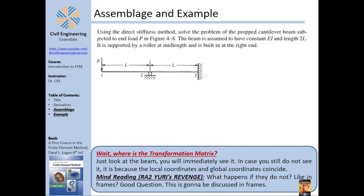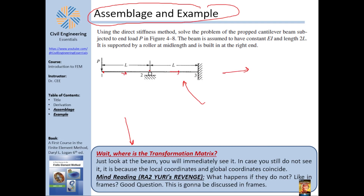Now for the assemblage example: we have a propped cantilever beam — a cantilever with a roller — and we want to find the stiffness matrix, solve for displacements and rotations, and then find shear forces and moments. Before starting: no transformation matrix is needed here because the global X-axis and the local X-axis of each beam element coincide. Transformation matrices would be needed for frame problems where element axes don't align with the global axis.